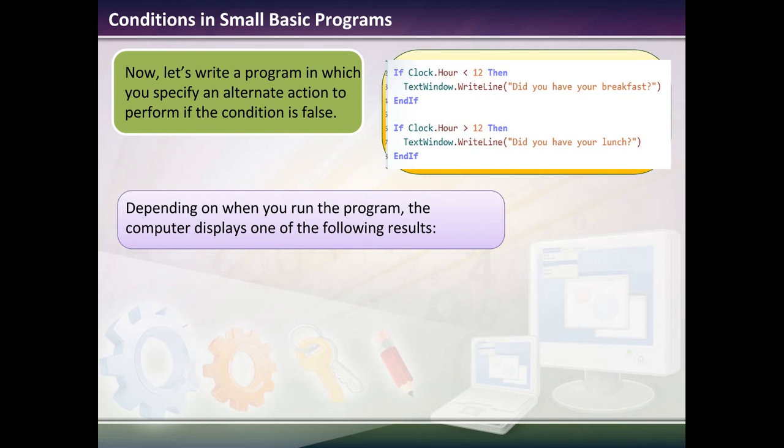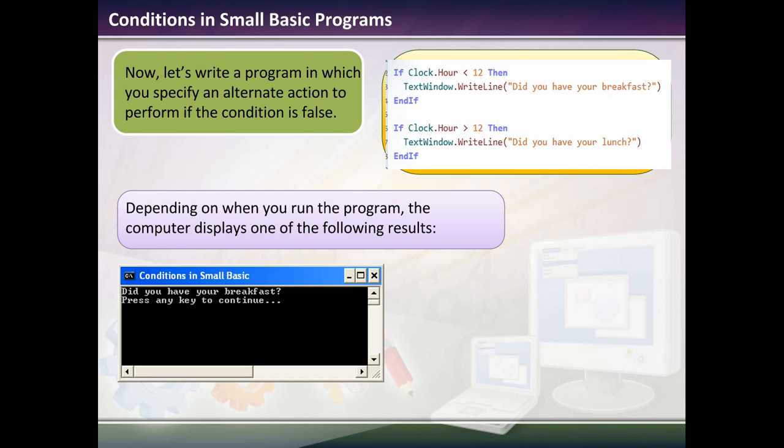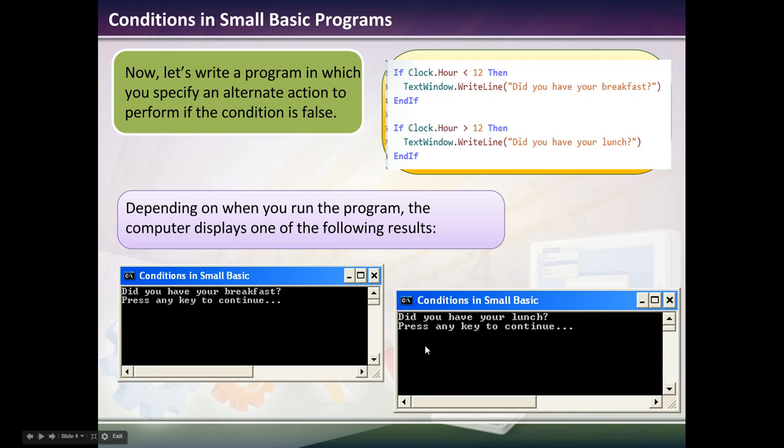Same kind of thing, but we're going to give it two options. In this next program, we have an alternate action to perform if the condition is false. So if the clock.hour is less than 12, then write, did you have breakfast? If that's not true, it goes to the next line, which is endif. That closes out this if-then statement. Then it says, if the clock.hour is greater than 12, which means after noon, then print in your text window, did you have lunch? Endif. So basically, when you run this program, if it's early in the morning, it will say, did you have breakfast? If it is 12:01, it will print, did you have lunch?